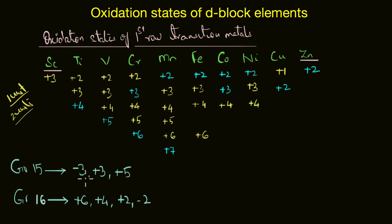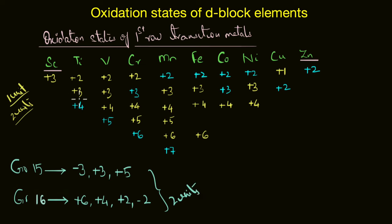In non-transition elements like the p-block elements, the oxidation states of elements usually differ by two units, whereas in d-block or transition elements, the oxidation states differ by only one unit.